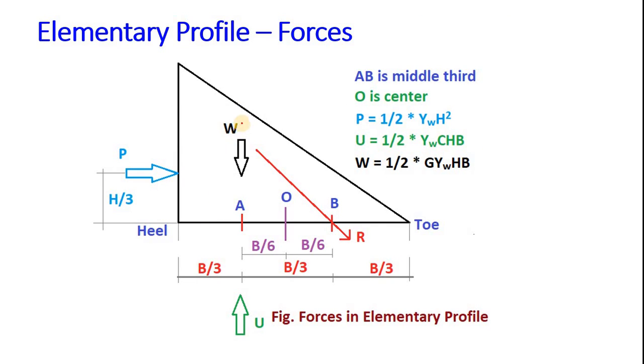In no tension for reservoir empty condition, there will be no P and no U, only W acts, so the resultant will be acting at A, which is safe. But in case of reservoir full condition, water will be up to the top and the resultant must be made to pass through B.